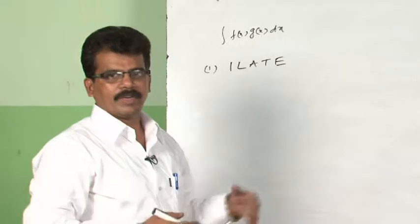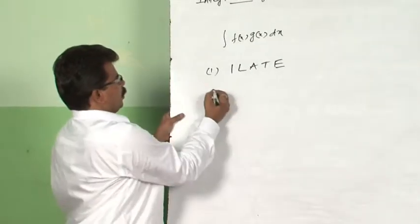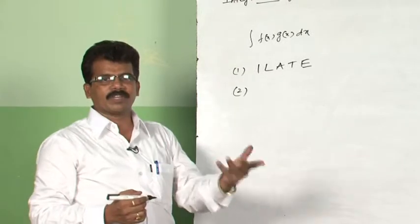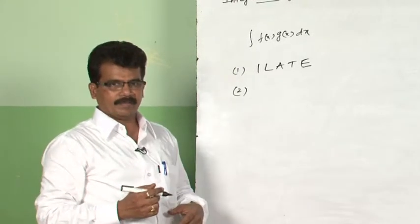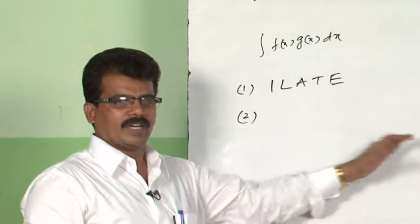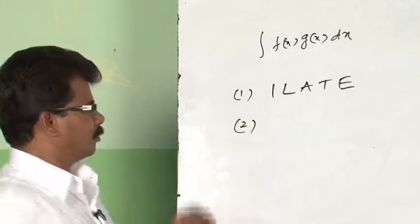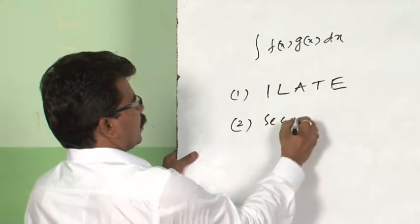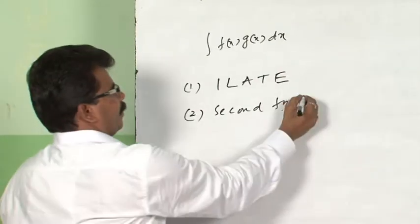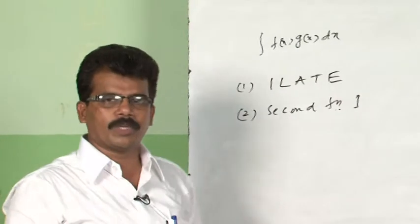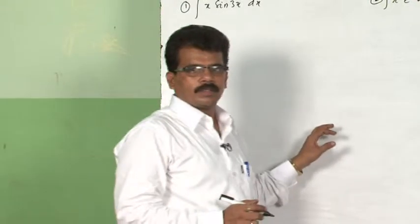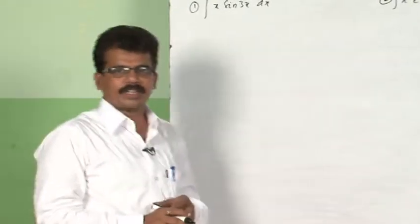So in this order the integration will be very simple. Number two: sometimes if a second function is not given, we take the second function as 1 and then integrate. For example, for ∫sin⁻¹x dx, we take the second function as 1. These are the two simple notes to follow while applying the uv formula. Now let us solve some questions using integration by parts.